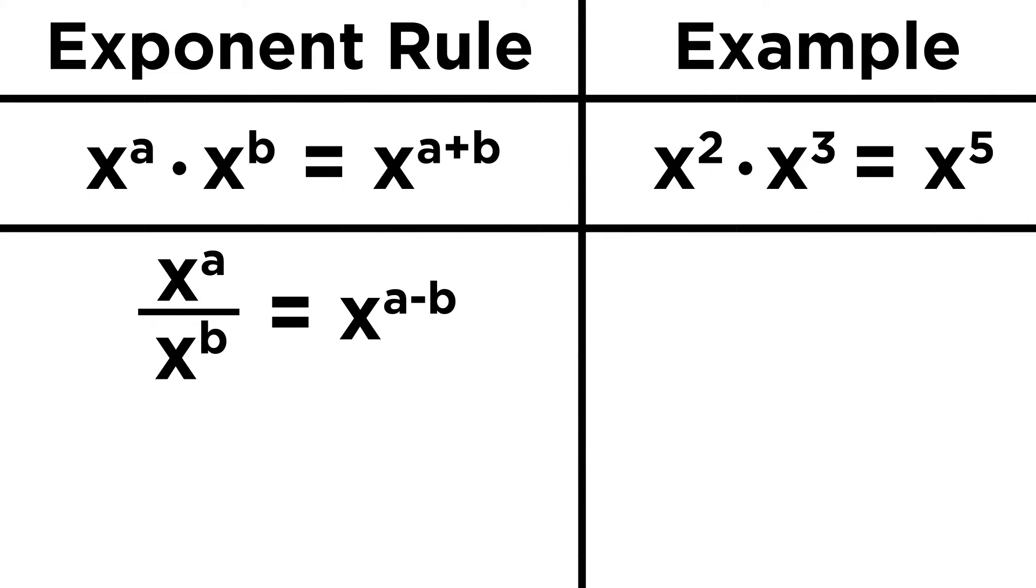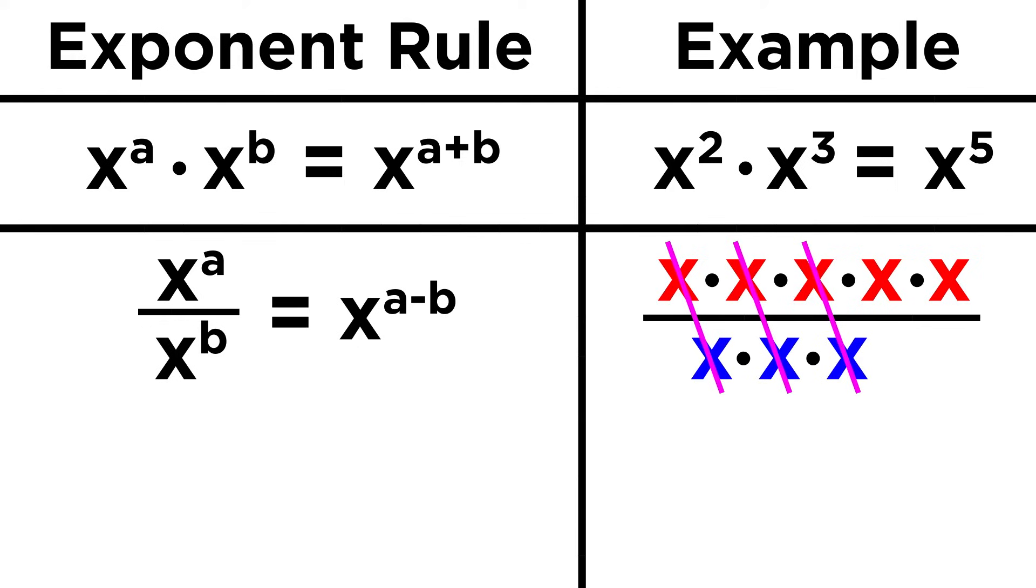For division, it's the opposite. X to the a over x to the b equals x to the a minus b. Again, this makes sense if we do something like x to the fifth divided by x to the third. If we change this into five x's over three x's, we can see that three of the x's cancel, leaving just two on the top, or x squared. The number of x's left is the number of them that are on the top minus the number of them that are on the bottom, hence x to the a minus b.